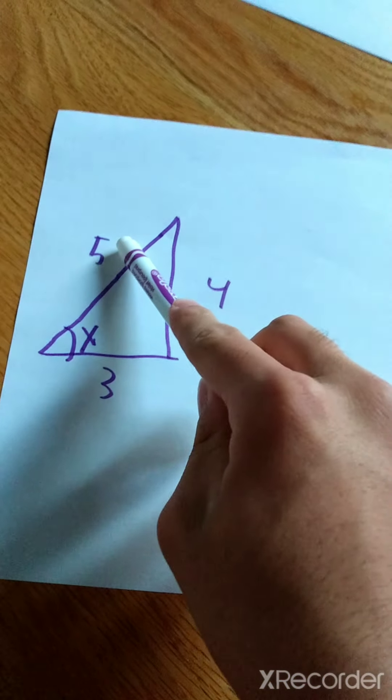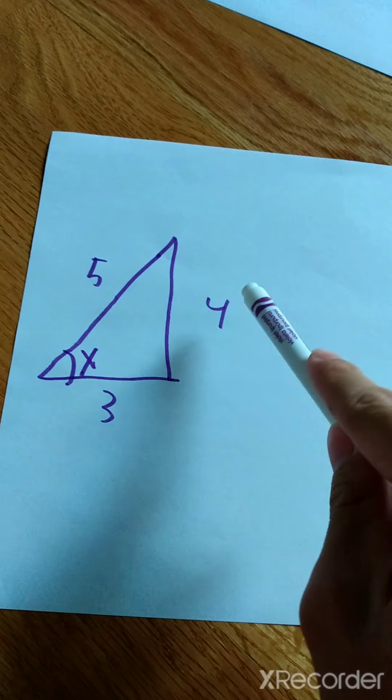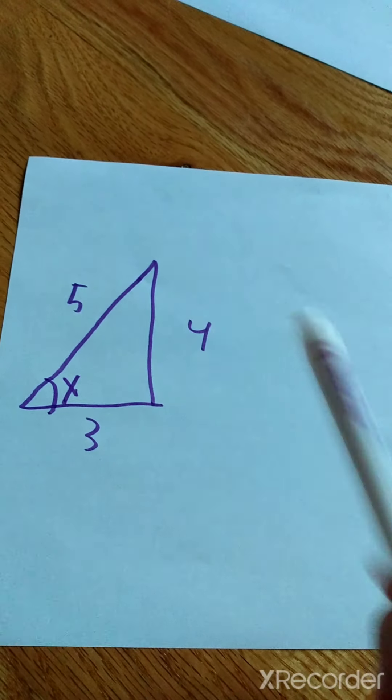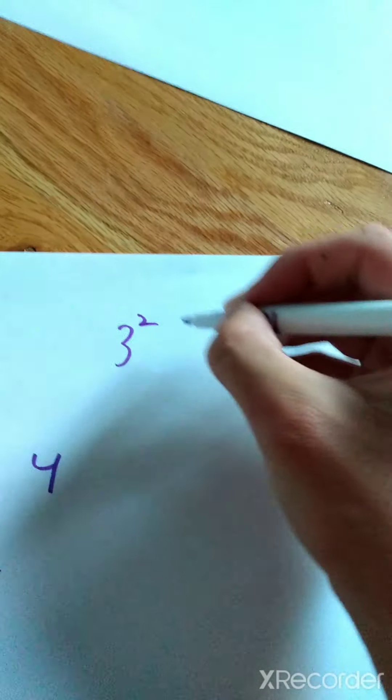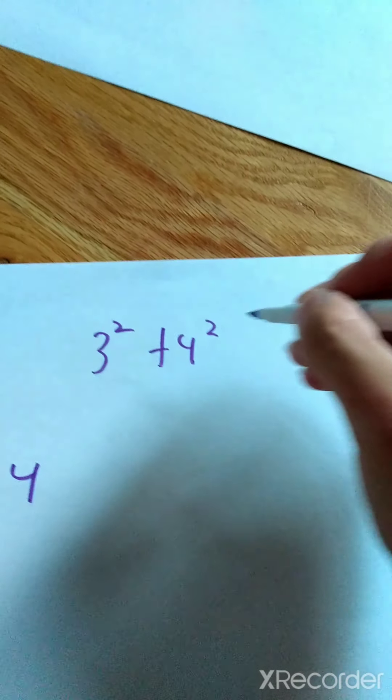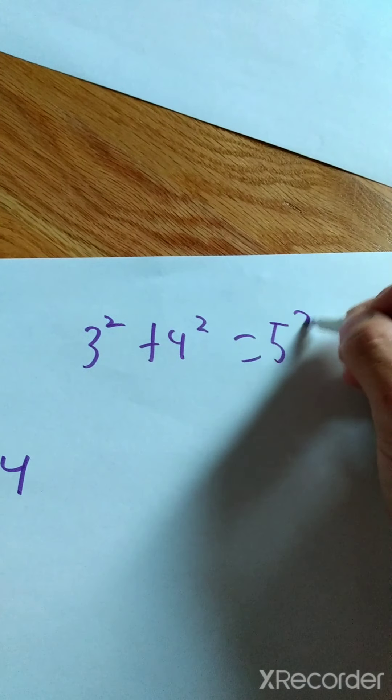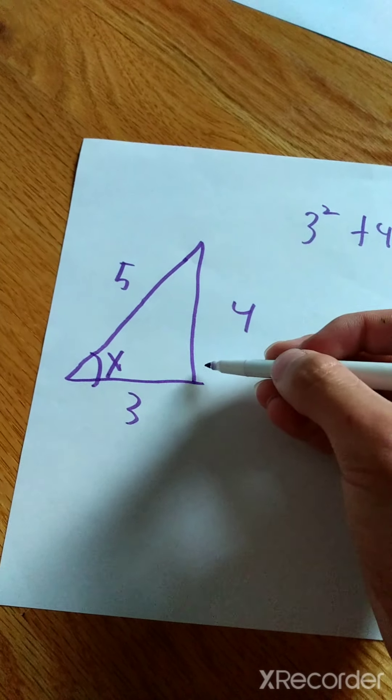Here is a right triangle. The hypotenuse is 5, one of the legs is 4, and the other leg is 3. So when we do the Pythagorean Theorem, 3 squared plus 4 squared is going to equal 5 squared. So this is definitely a right triangle.